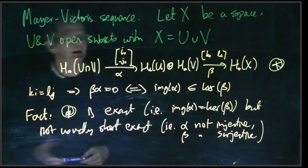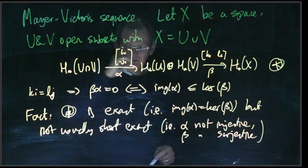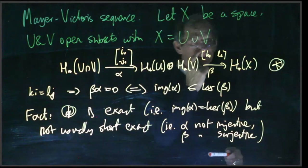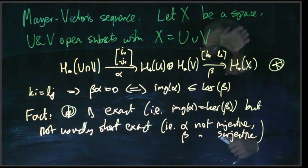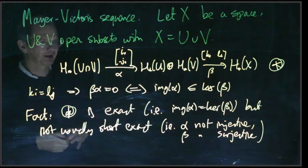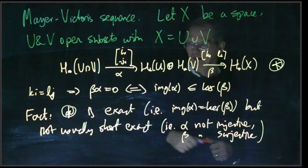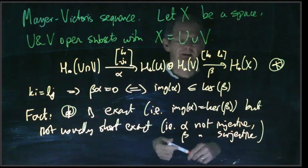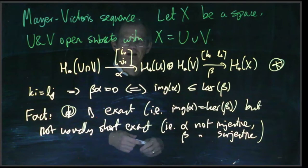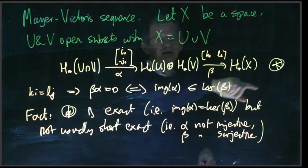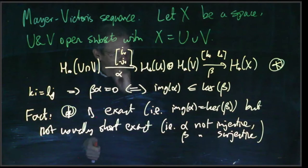That's kind of unfortunate. The sort of hope with this is that typically U and V and U intersect V might be simpler spaces than X somehow, and you would hope to start by understanding the homology of U intersect V, U and V, and then somehow from that deduce what the homology of X is. If you knew that this was a short exact sequence, then you could do that. But just knowing that it's an exact sequence is not really strong enough. We need to know about the kernel of alpha and the image of beta or equivalently the cokernel of beta. The key thing about the Mayer-Vietoris theorem is that the kernel of alpha is closely related to the cokernel of beta.